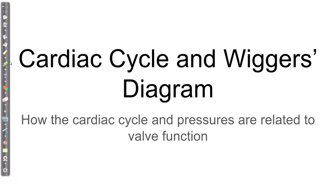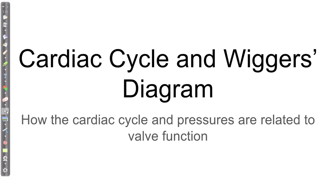Today we're going to take a look at the cardiac cycle. We're going to start some cardiovascular physiology and look at how the cardiac cycle works. We're going to look at what's known as the Wiggers Diagram, which is an example of showing pressures in the heart and the cardiac cycle in graphic form. We'll look at how the two compare and how the valves function, and how we can use that to figure out where we are in the cardiac cycle.